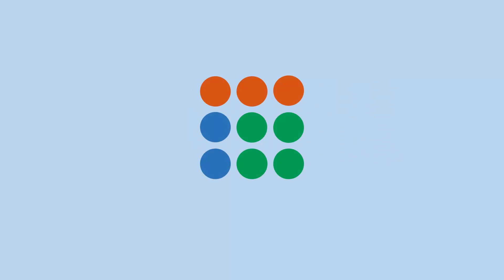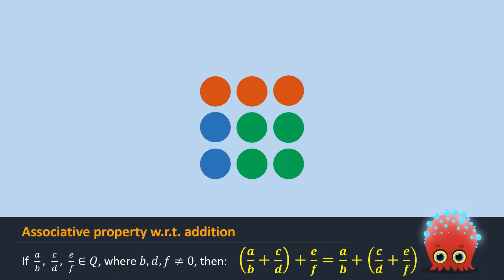The same is true for addition of three rational numbers. If A over B, C over D, and E over F are any three rational numbers where B, D, and F are not equal to zero, then we get the given equation. This is called the associative property of rational numbers with respect to addition.